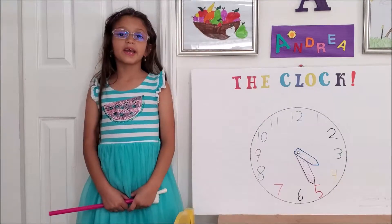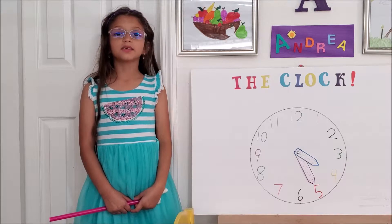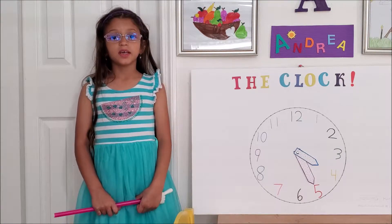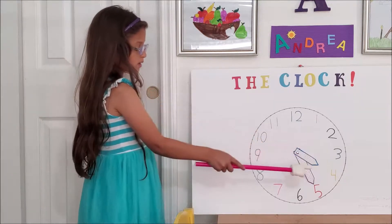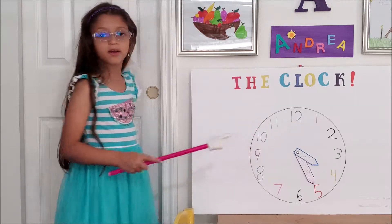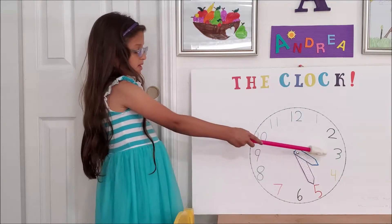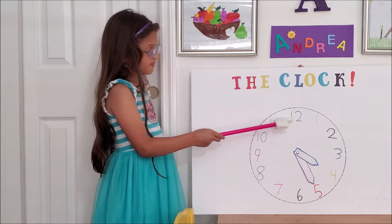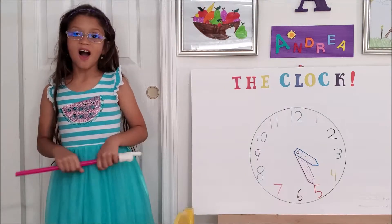Another easier way to read the minutes is to learn the quarters. There are four quarters in the analog clock: one, two, three, and four. That represents 15 minutes, 30 minutes, 45 minutes, and 60 minutes — or you could say o'clock.